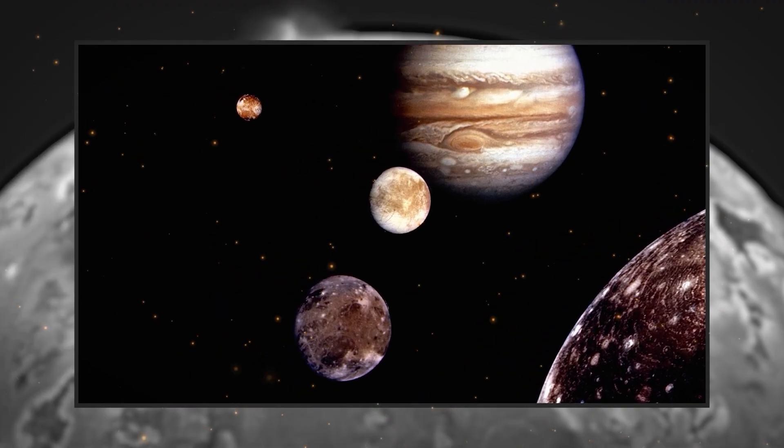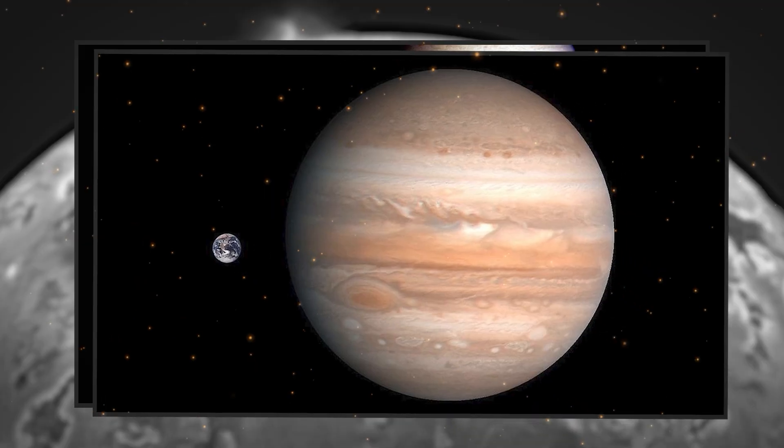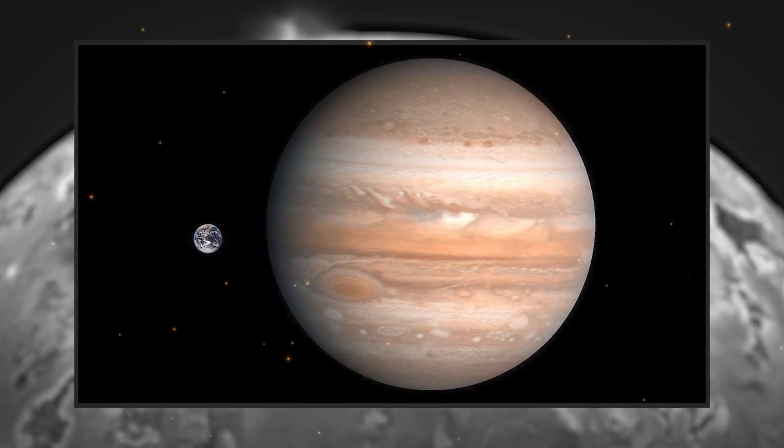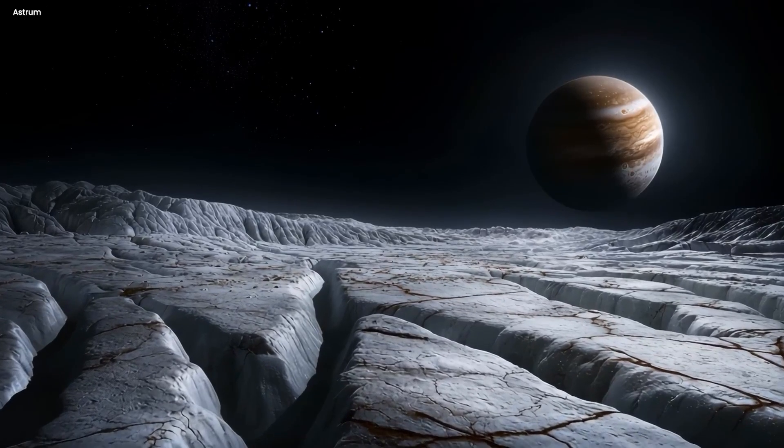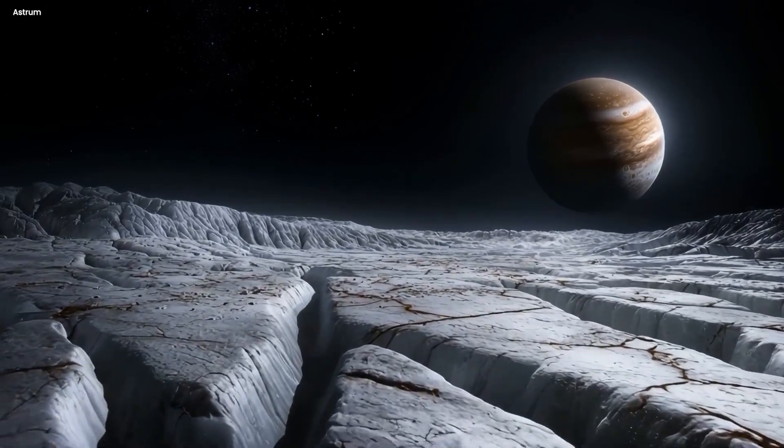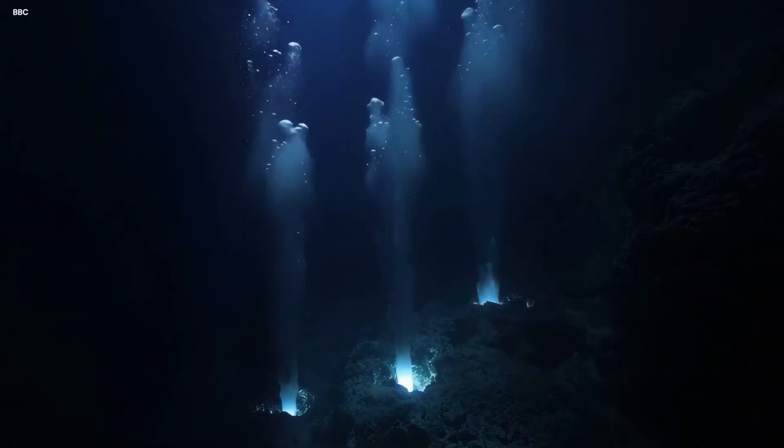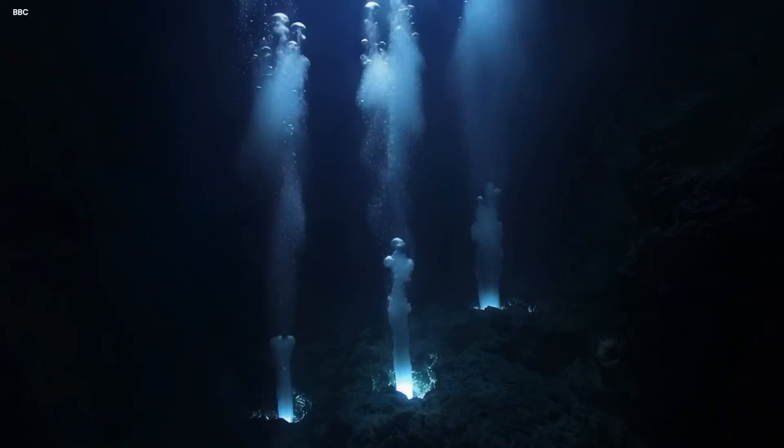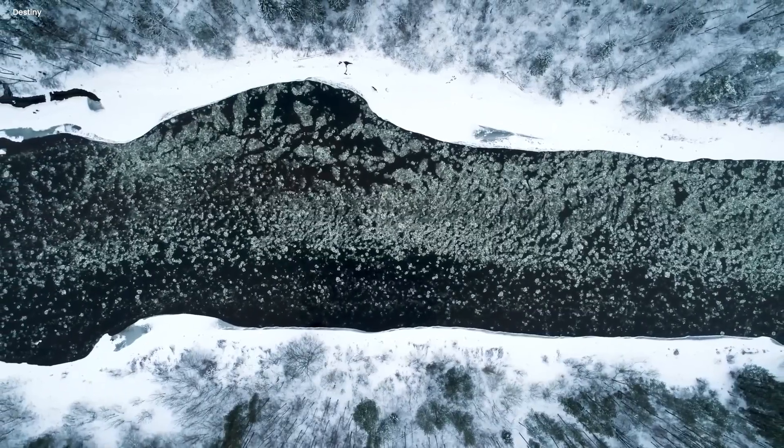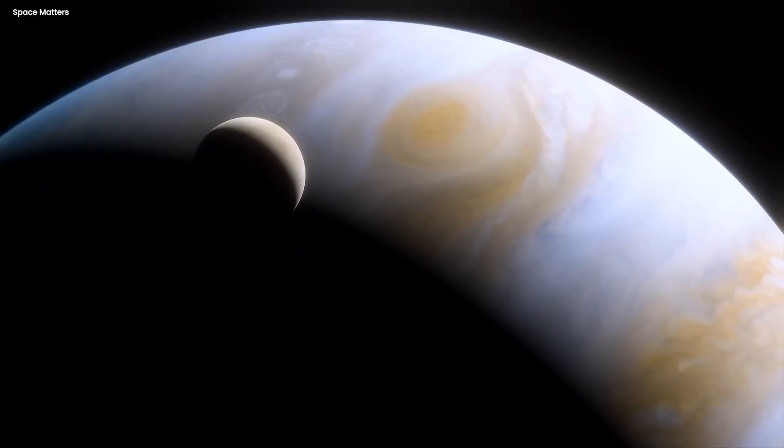So when you add it all up, Jupiter and its moons offer more variety, more extremes, and more potential for discovery than Earth ever could. We're just one planet. Jupiter is an entire miniature solar system, with oceans and volcanoes and magnetic fields and radiation belts and atmospheric storms that have been raging for centuries. It's the ultimate destination for exploration.